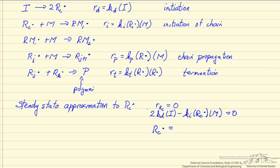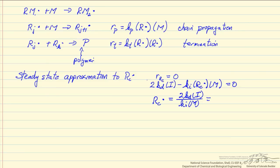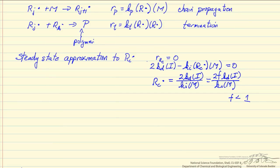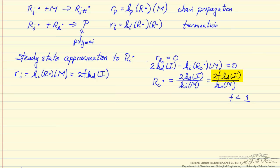We add a factor f for the initiator efficiency, which is some number less than 1. Everything else in the equation is the same. This initiator efficiency accounts for the fact that some initiator radicals are lost due to recombination or scavenging. Our rate of initiation — which is K_i times the primary radical concentration times the monomer concentration — can be written as 2 times f times the rate constant for decomposition of the initiator times the initiator concentration.